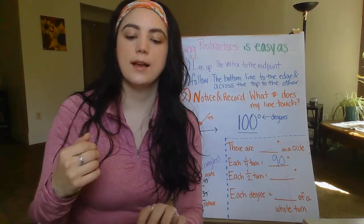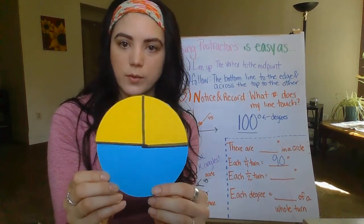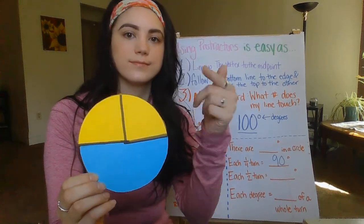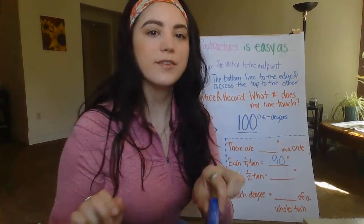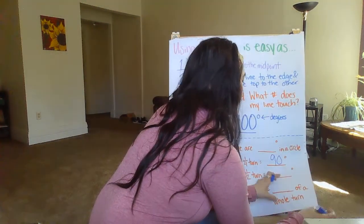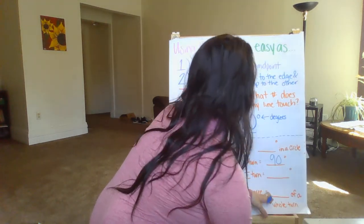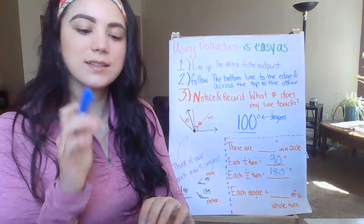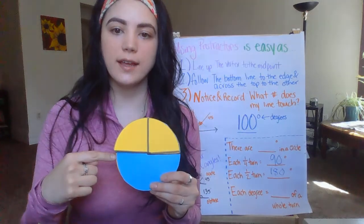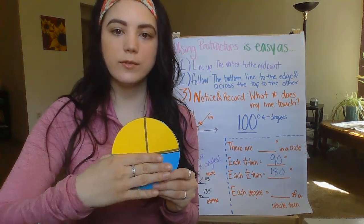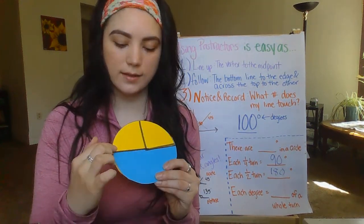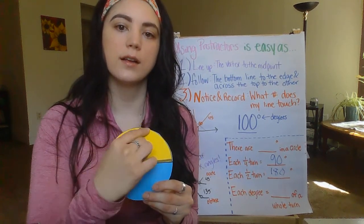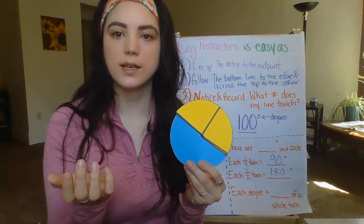If you said 180 degrees, you are correct. If you also notice, we have a straight angle here — just talking about the yellow. Our line starts here and ends here, that's a straight line. We're measuring from here to here — it's straight. A straight angle is 180 degrees.